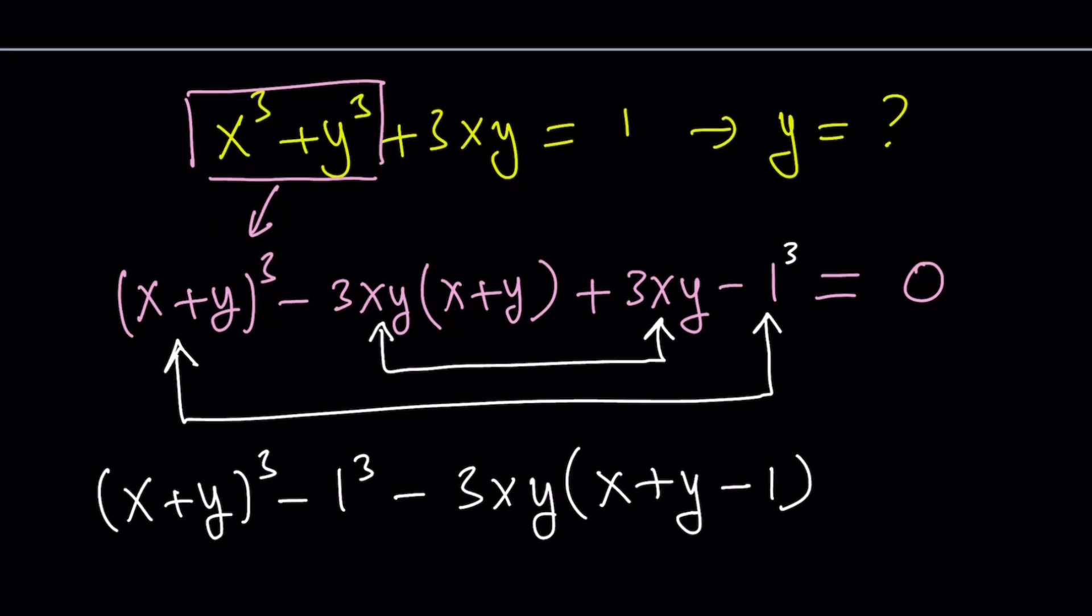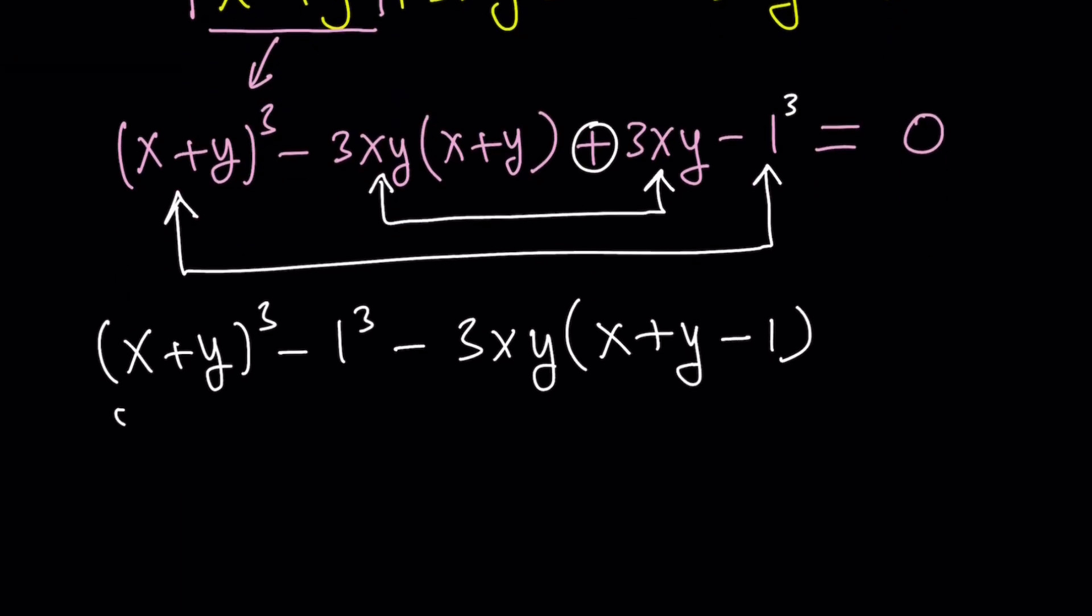We need the negative 1 here because this is positive and we took out a negative. Now, if you look at these two terms, it's factorable by difference of two cubes. This is going to be one of the factors.